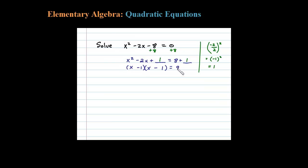On the right side here we get 9, so that leaves us with X minus 1 squared equals 9.